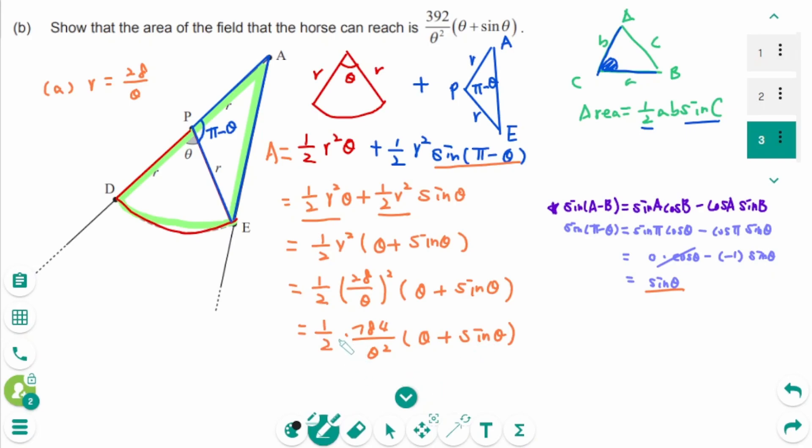The final answer is 2 times 392, so 392 over theta squared times theta plus sin theta.